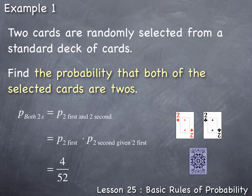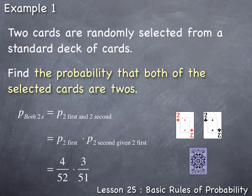The given information redefines the total. Given that the first card selected was a two, the total remaining cards in the deck is now 51. Of those 51 remaining cards, there are only three twos left. So the probability of selecting a two the second time, given a two was selected first, is 3 out of 51 — one less two and one less card in the deck.